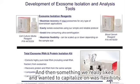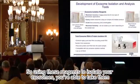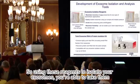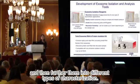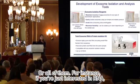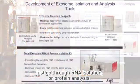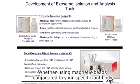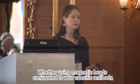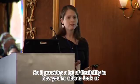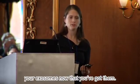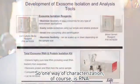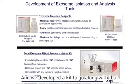Something we really liked and wanted to capitalize on was flexibility. Using these reagents to isolate your exosomes, you're able to take them and further them into different types of characterization — or all of them. For instance, if you're just interested in RNA, just go through RNA isolation or protein analysis. Or you can take your exosome fraction and further process it for looking at subpopulations, whether using magnetic beads conjugated to a specific antibody or another method. We also developed a kit for RNA characterization to go along with this workflow.